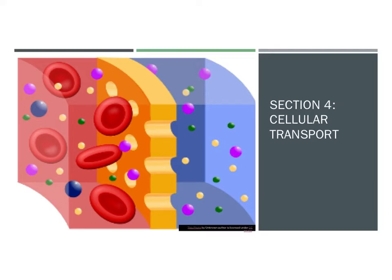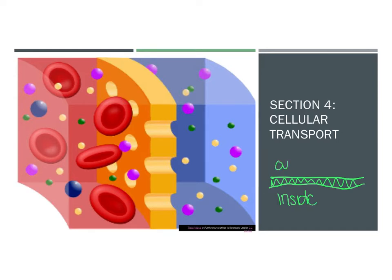Today we're going to start talking about cellular transport — the idea of how things cross through the membrane and either go into or out of the cell. We have this plasma membrane, with the inside and outside of the cell on each side. That membrane acts as a barrier and functions like a gate, helping control what can pass in and out of the cell.